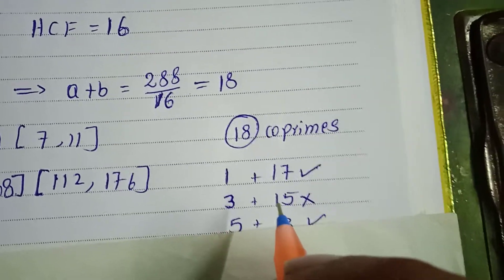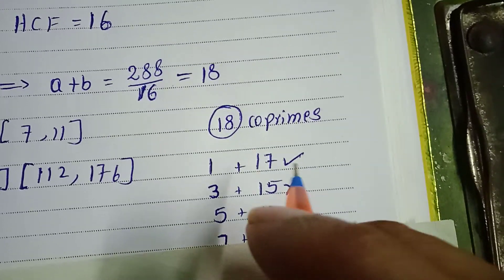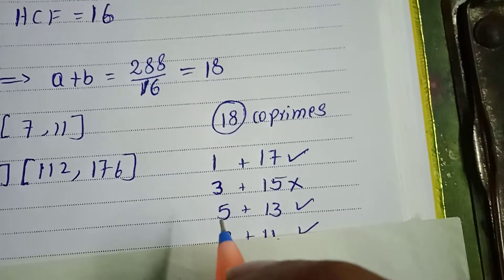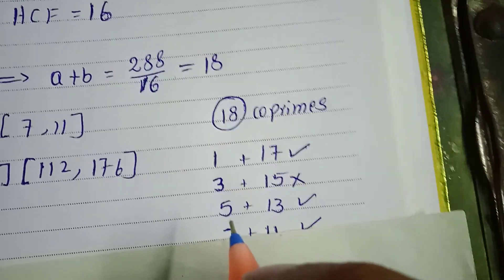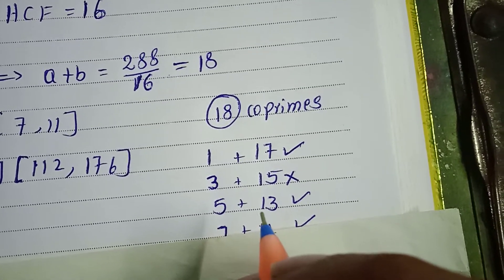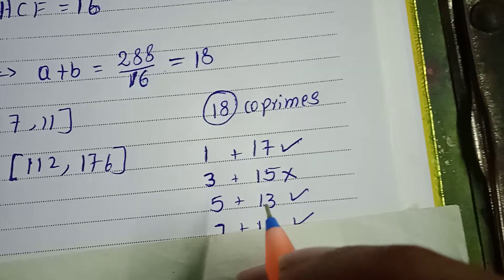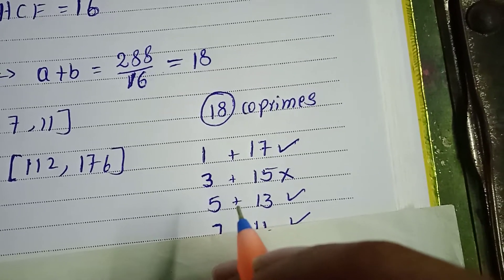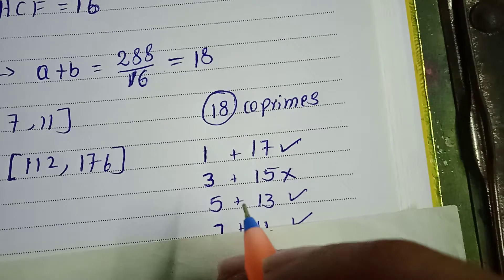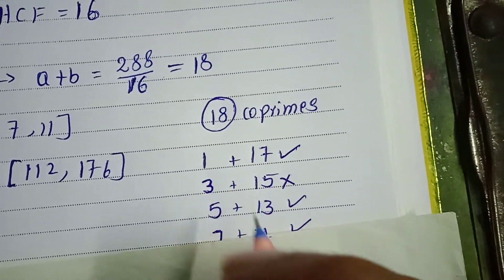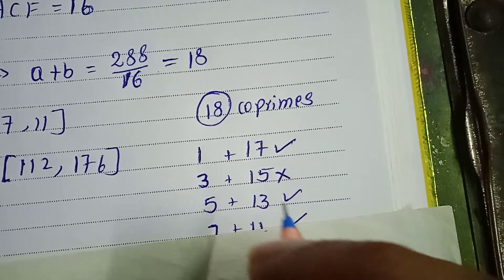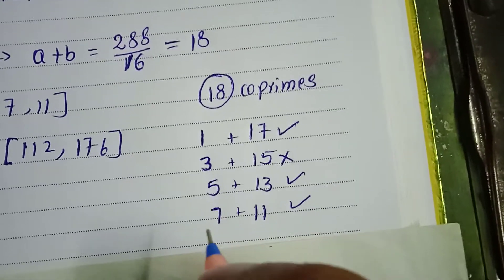Both are prime numbers and their addition gives 18, so this is an accepted pair. Next, 7 is a prime number and 11 is also prime. 7 plus 11 equals 18, so this pair is satisfied.